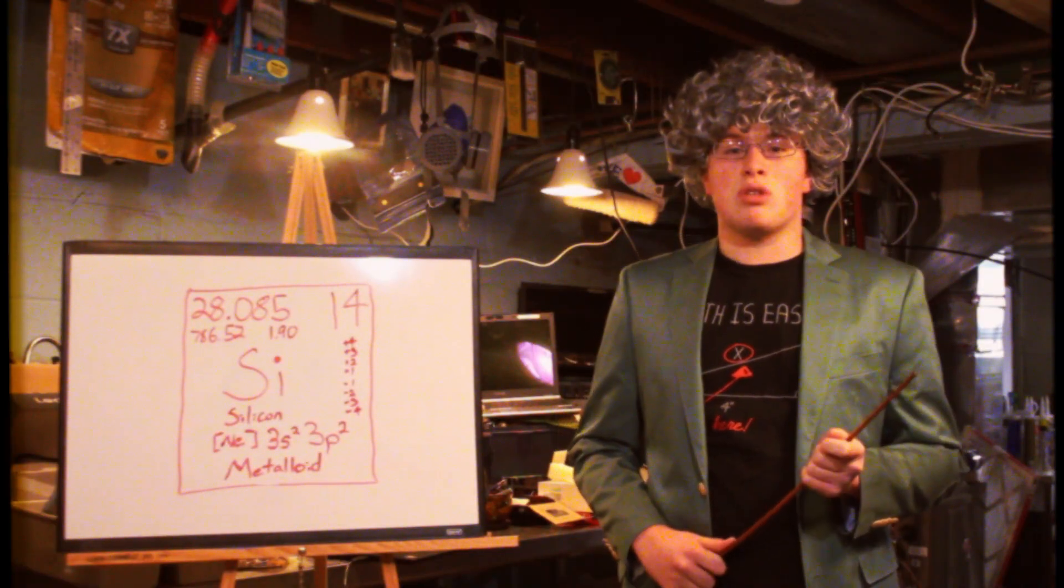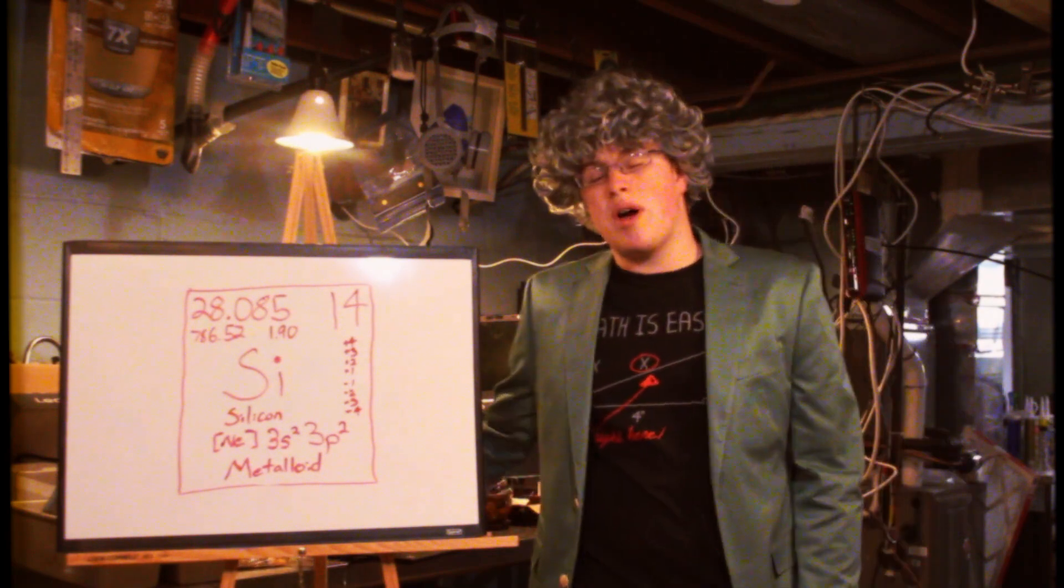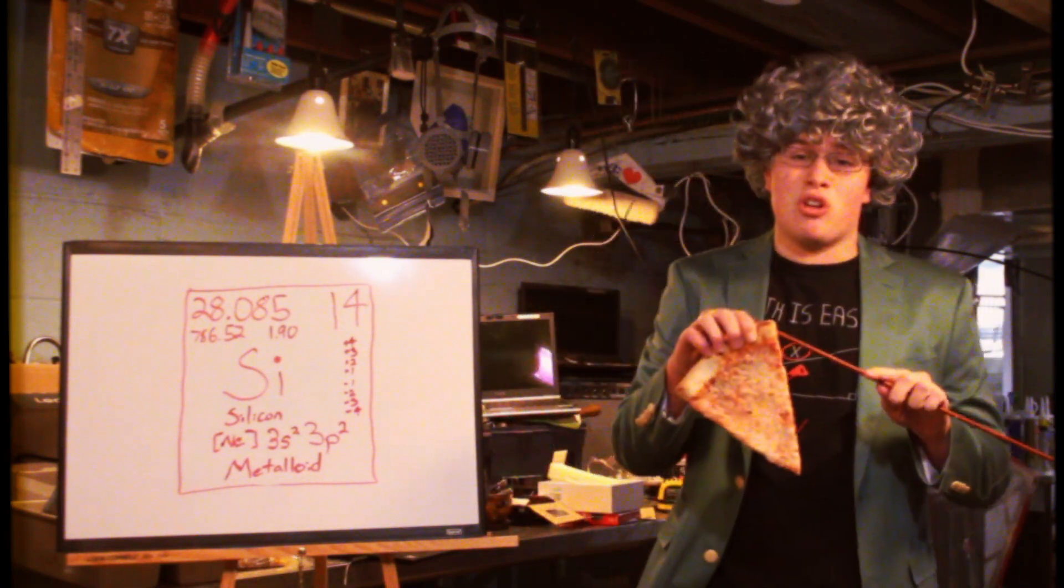Silicon is the second most common element on the earth after oxygen. Also, it makes up 95% of the earth's crust.